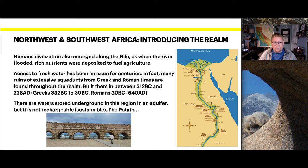Human civilization also emerged along the Nile — when the river floods, rich nutrients are deposited to fuel agriculture. Access to fresh water has been an issue for centuries; in fact, many ruins of extensive aqueducts from Greek and Roman times are found throughout the realm. There are waters stored underground in what's considered the Nubian aquifer, but it's not rechargeable or sustainable.